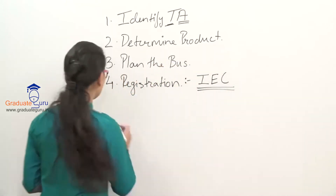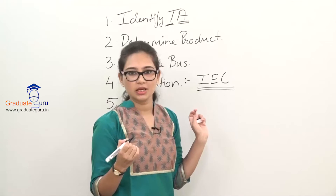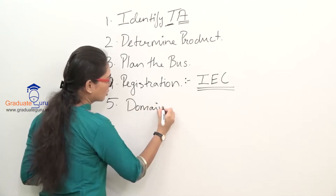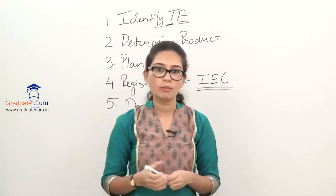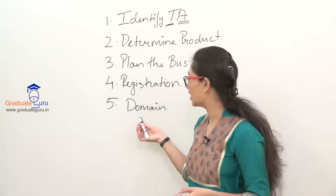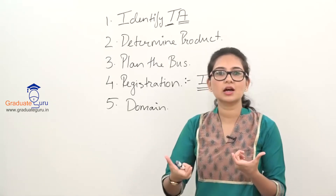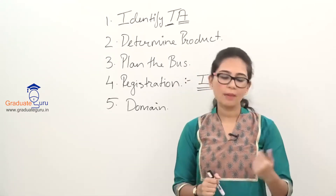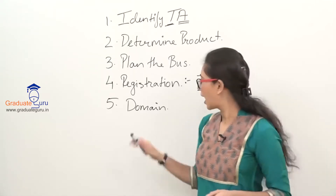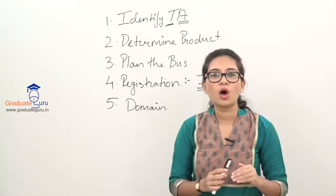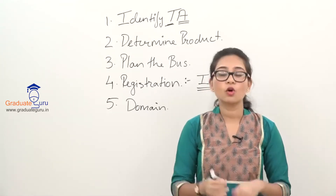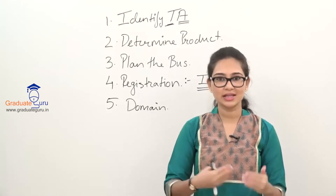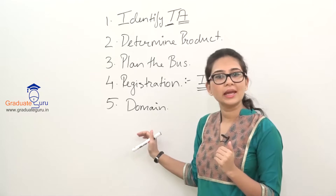The fifth step is to acquire a domain name. If somebody asks where to find your product, you should be able to say, for example, go to graduateguru.co.in and you will get the facilities. The domain name specifies what subjects are offered, who the professor is, how they teach, and allows for demo lectures. So you have to acquire a domain name.